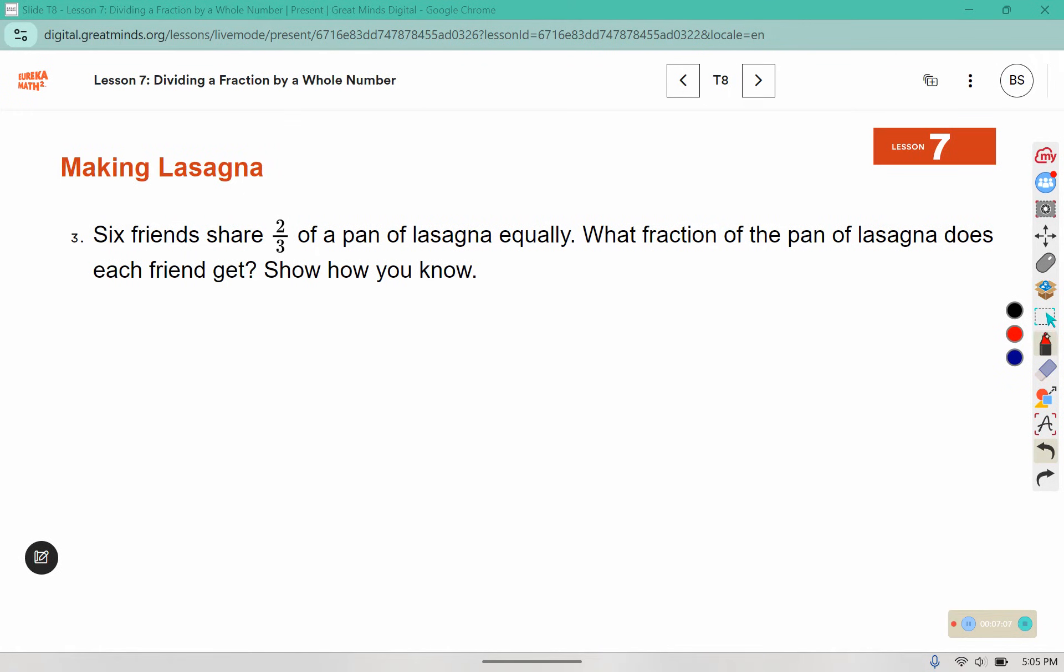6 friends share 2/3 of a pan of lasagna equally. What fraction of the pan does each friend get? So 2/3 is shared with 6 friends. Put the invisible one down there. Leave, change, change. 2 times 1 is 2, 3 times 6 is 18. We can leave it like that or we can reduce because 2 fits into 2 once and 2 fits into 18 nine times. So each friend gets 1/9 of a pan.